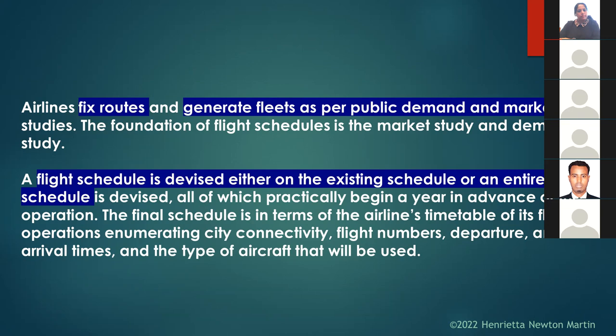A flight schedule is devised either on the existing schedule or as an entirely new schedule, and this process practically begins a year in advance of the operation. The final schedule is the airline's timetable of its flight operations, enumerating city connectivity, flight numbers, departure and arrival times, and the type of aircraft that will be used.